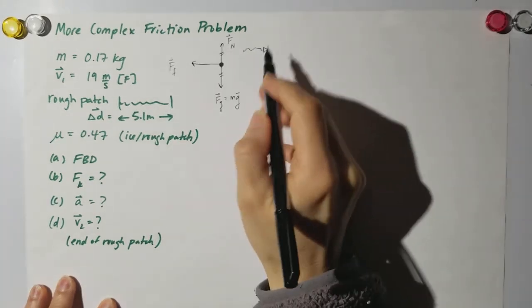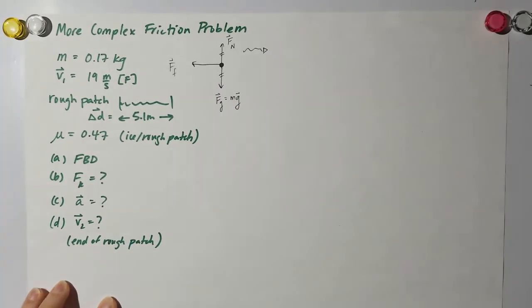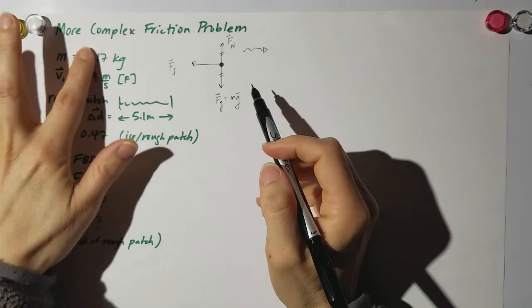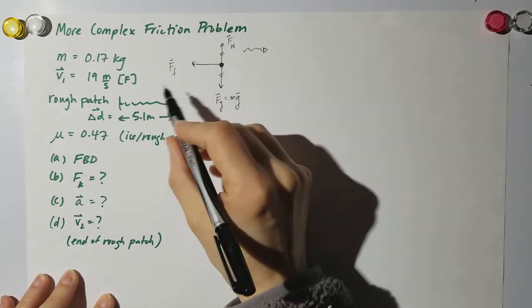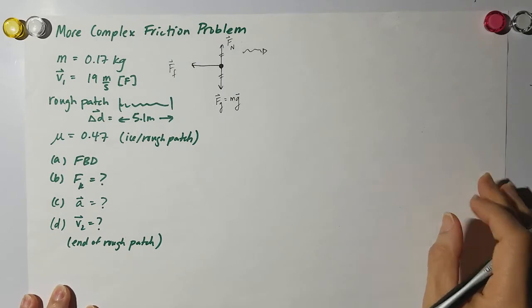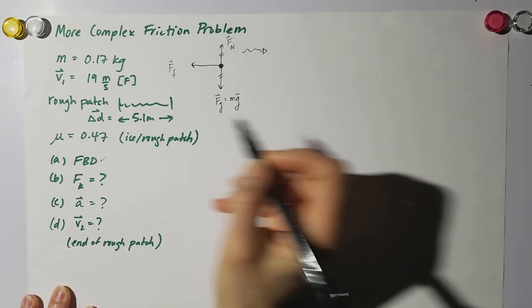Don't forget the motion is this direction but the force is that direction, which means we are slowing down. There's going to be a negative acceleration to the right. So there's our free body diagram. Here are my knowns. If we want we can write them here but I'm just going to try and save space. So there's the FBD.